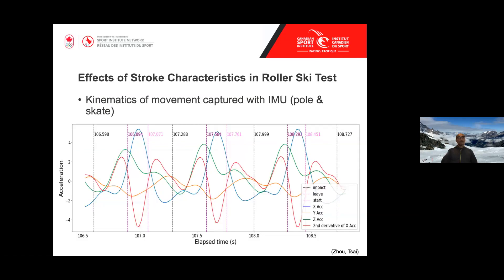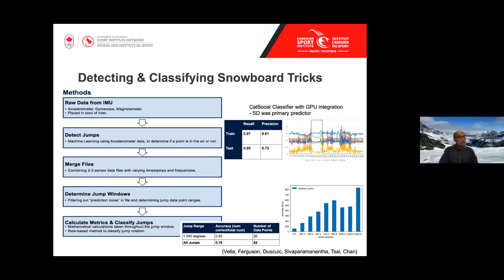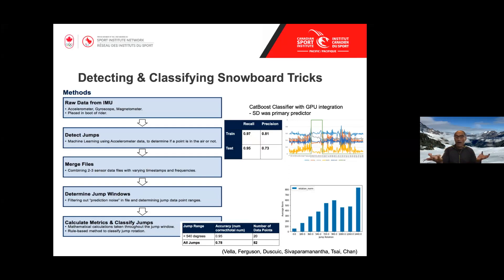On jump detection: the moment athletes are in the air, you can detect it because they go up a ramp, acceleration decreases, and once airborne, one of the axes shows a gravity pull—that's how we detect the jump.